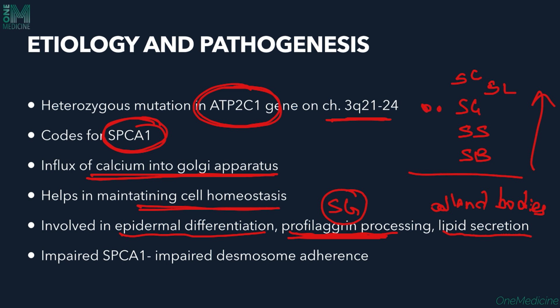Odland bodies are present in the stratum granulosum and upper layers of the stratum spinosum. These Odland bodies are secreted outside the cell and lie in between the corneocytes in the stratum corneum, which is required for the lipid layer formation of the epidermis. This lipid layer forms a barrier important for skin hydration and preventing transepidermal water loss. Keratohyalin granules contain profilaggrin molecules and are important in forming the cornified envelope.